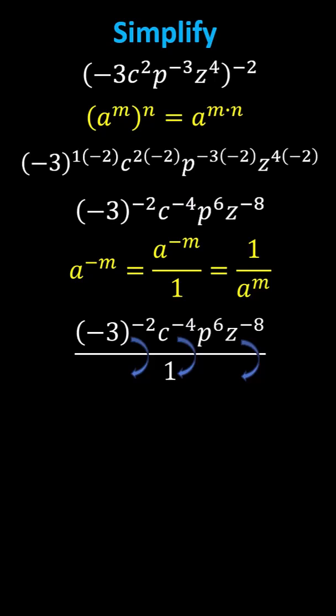This gives us p to the power of 6 divided by the product of the square of negative 3, the fourth power of c, and the eighth power of z. For the last step, we square negative 3. The simplified expression is p to the sixth divided by 9c to the fourth z to the eighth.